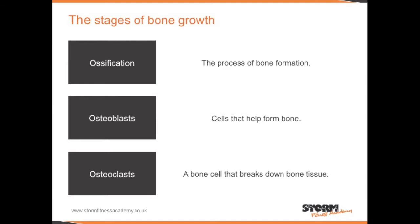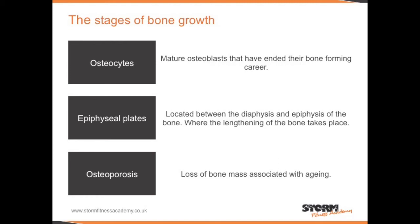Bone hasn't always been bone — it usually begins its life as cartilage. Through a process called ossification, which is the process of bone formation, cartilage eventually becomes bone. It does this using two specific cells: osteoblasts and osteoclasts. Osteoblasts are cells that help to form bone. Osteoclasts clear away dead bone cells. Osteocytes are mature osteoblasts that have ended their bone-forming career.